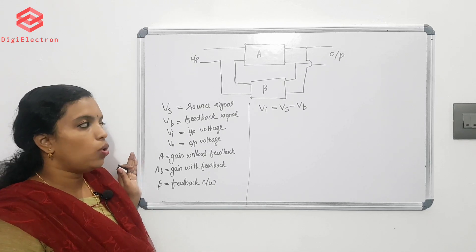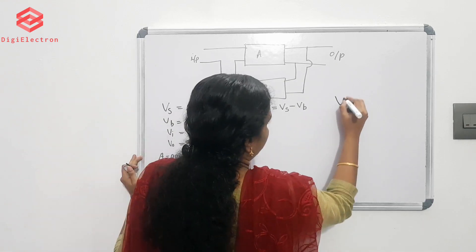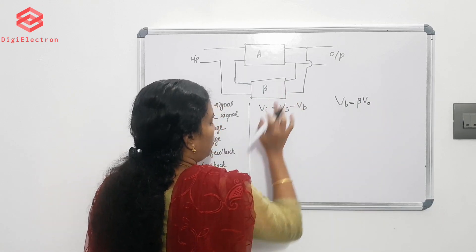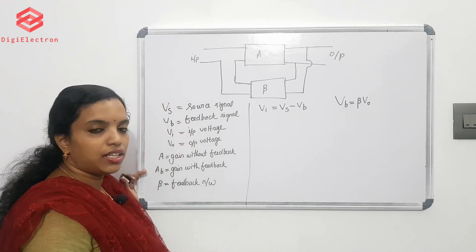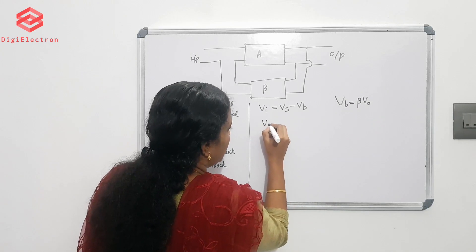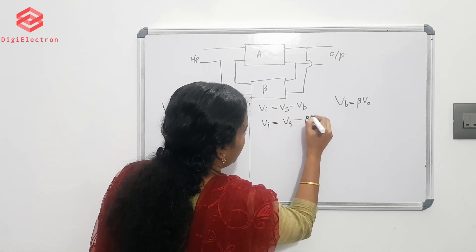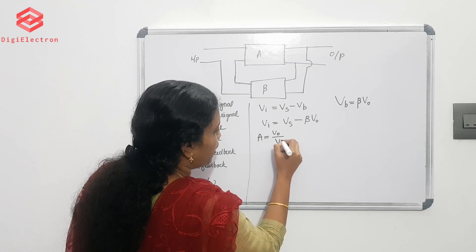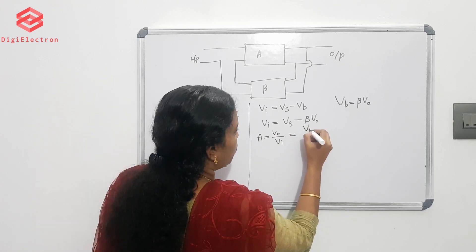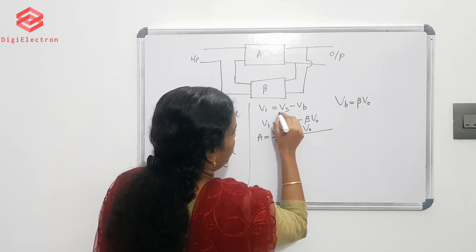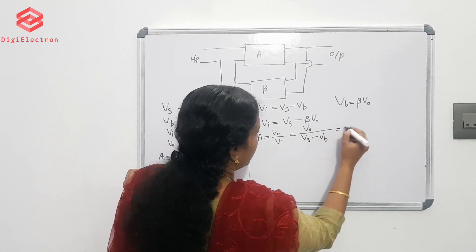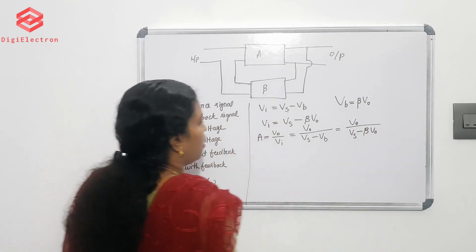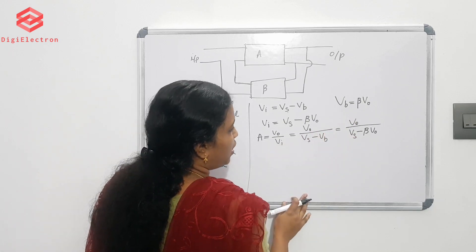So the input voltage Vi equals source voltage Vs minus feedback voltage Vb. And Vb equals beta into V0. Substituting, Vi equals Vs minus beta into V0. If we look at the gain, we calculate: output voltage divided by input voltage. V0 equals A into Vi. We substitute A equals V0 divided by Vs minus beta into V0.